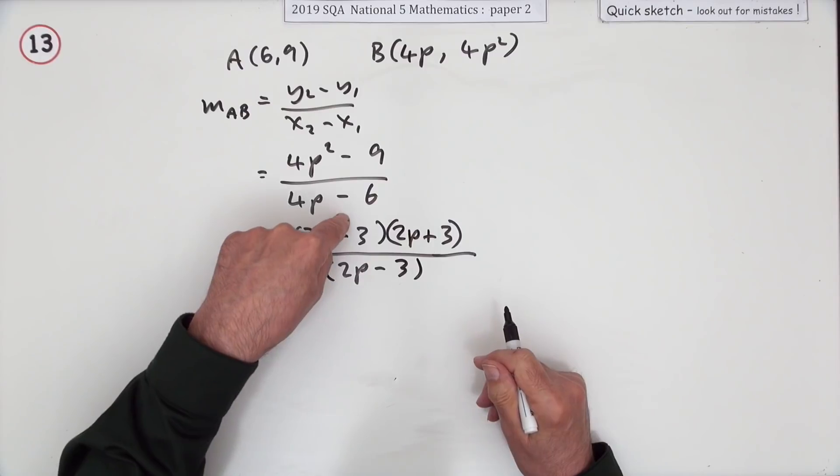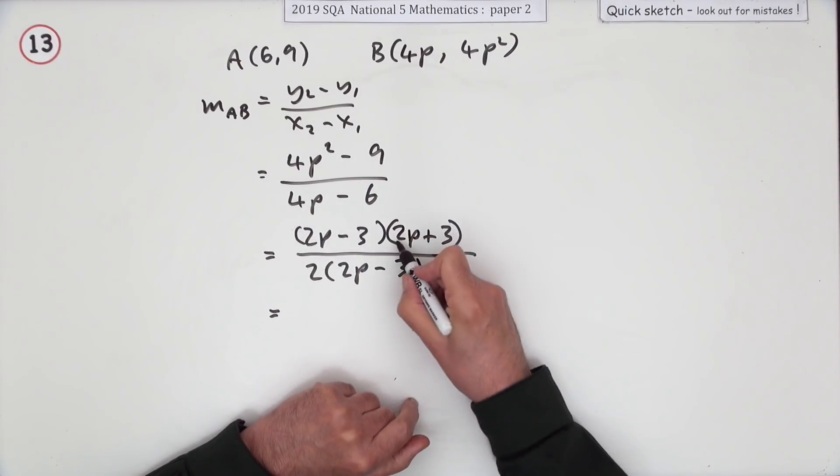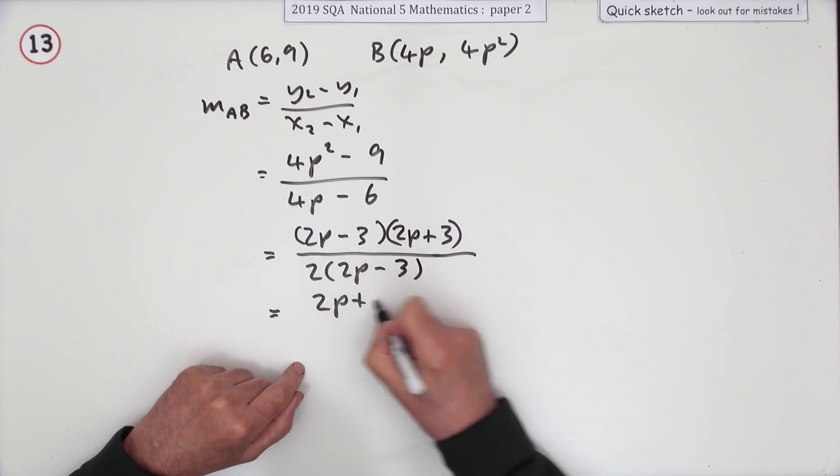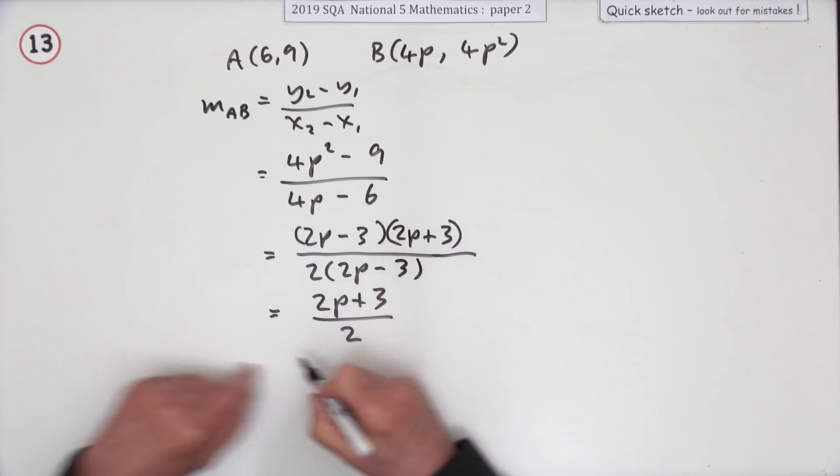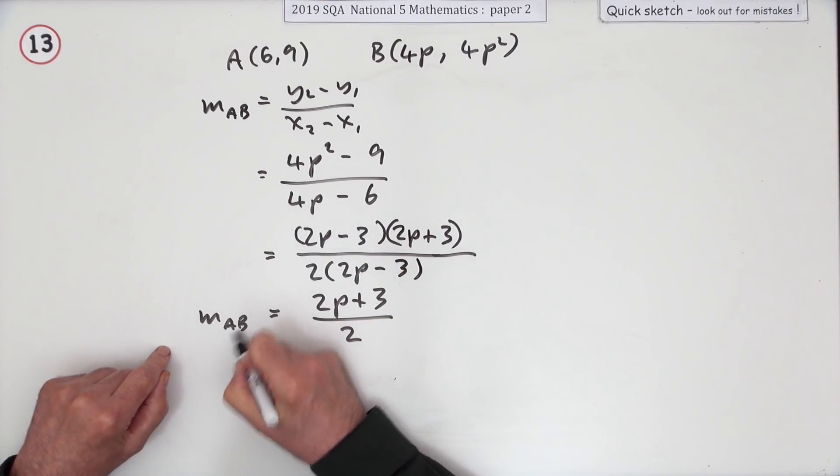That will cancel that out since they're factors, leaving (2p + 3) over 2 for the gradient of AB.